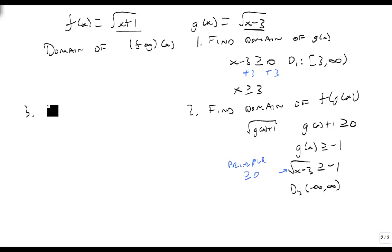So step 3, we take domain 1, and we intersect it with domain 2. So we want to know, here is 0, 1, 2, 3. When is this the same as this? And that's this piece right here. So the domain of the whole thing is 3 to infinity.